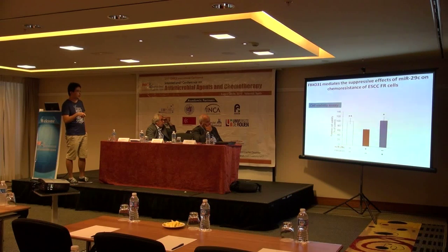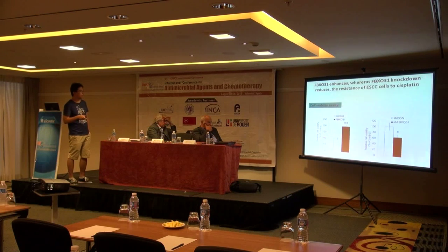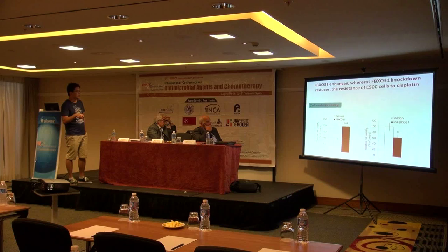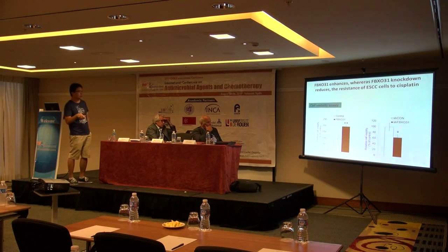We overexpressed miR-29C and found that miR-29C can downregulate the chemoresistance of cancer cells to 5-FU treatment. After overexpression of FBXO31, this effect was abrogated. Next, we confirmed the role of FBXO31 in resistance to cisplatin, another commonly used drug in treating esophageal cancer. Overexpression of FBXO31 enhanced resistance to cisplatin, while conversely, downregulation of FBXO31 reversed resistance to cisplatin.